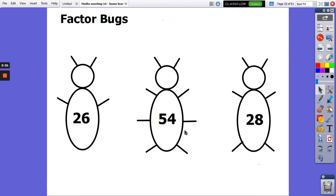Factor bugs. We've got 26, 54, and 28. I want you to write down the factors of each of those three numbers now.